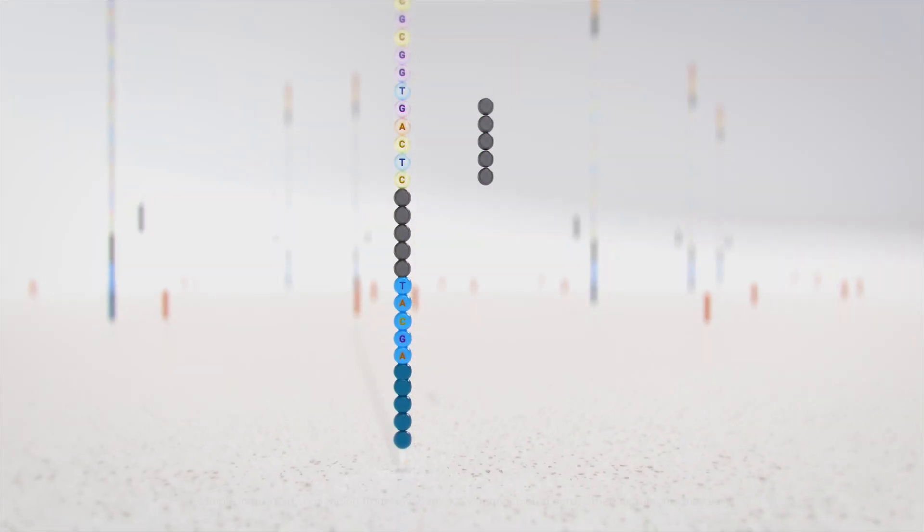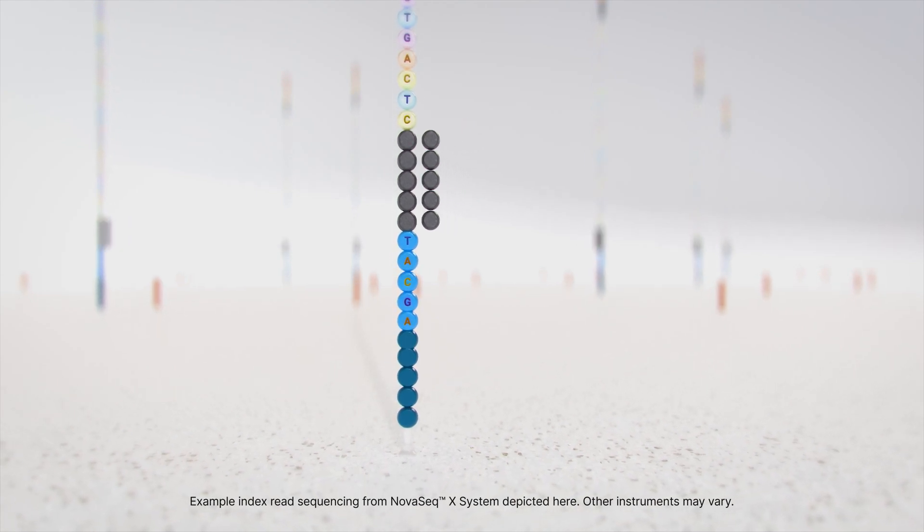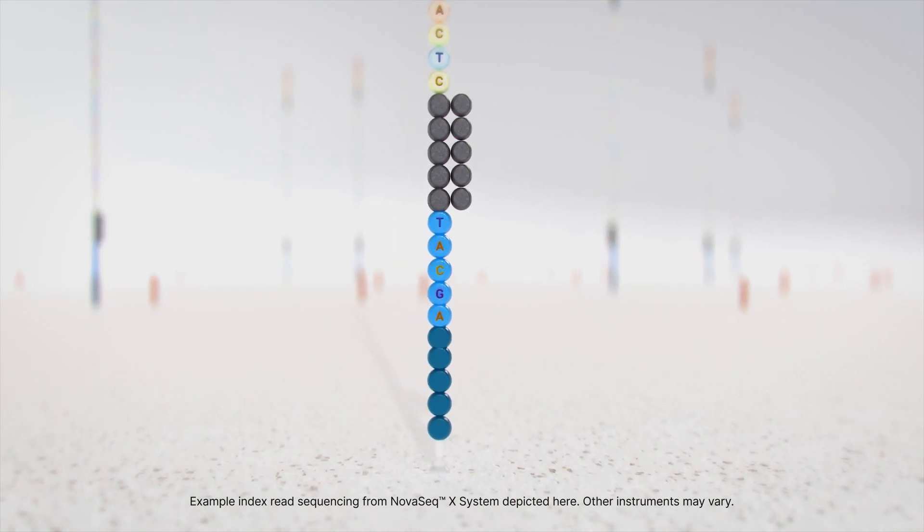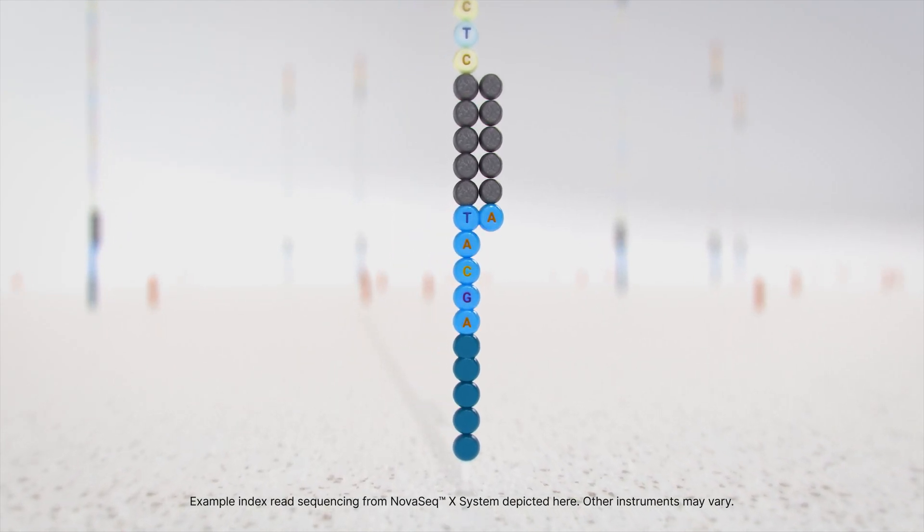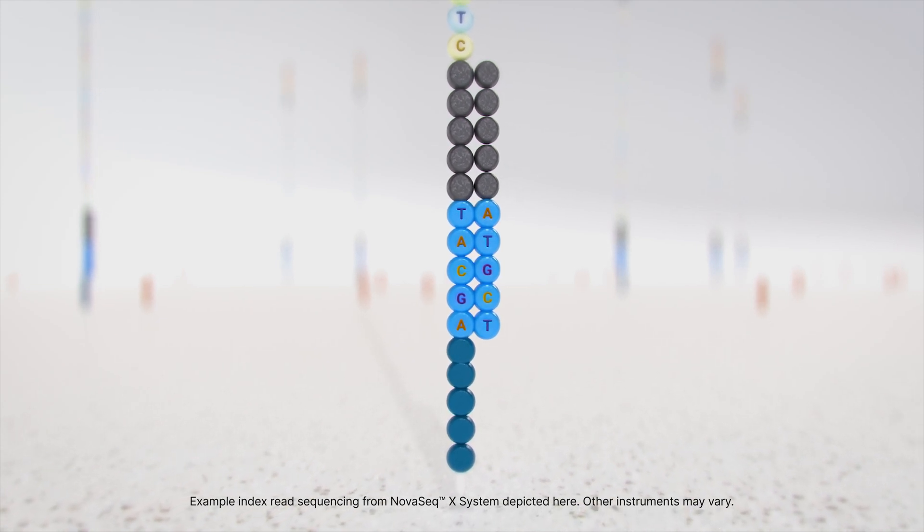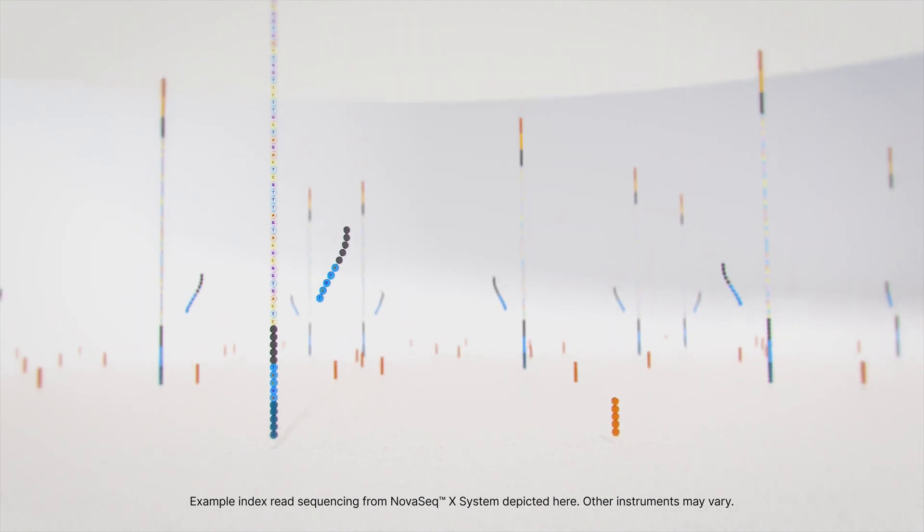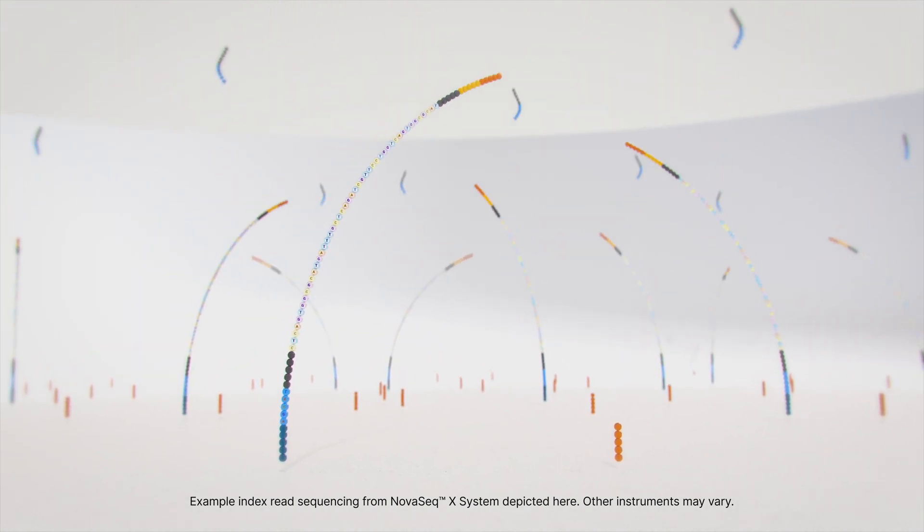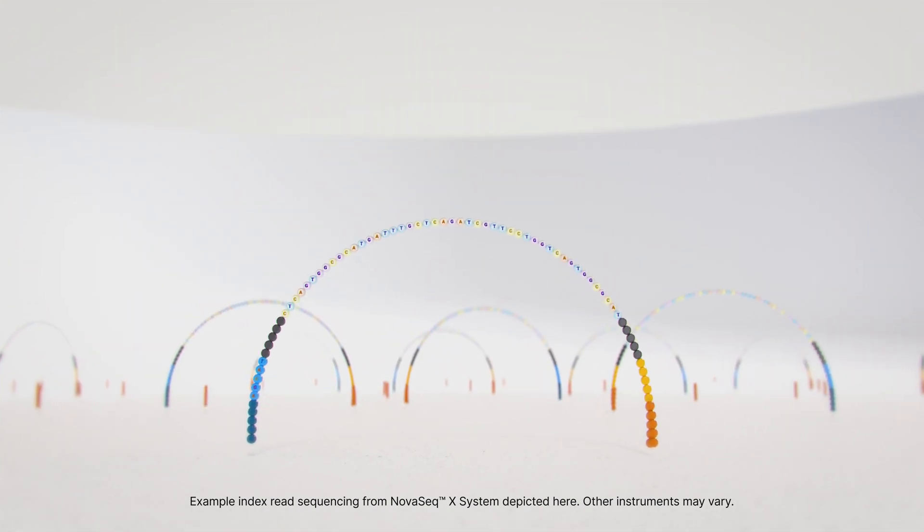In this step of the example, the index one read primer is introduced and hybridized to the template. The index read is generated similar to the first read. After completion of the index read, the read product is washed off. The template now folds over and binds the second oligo on the flow cell.